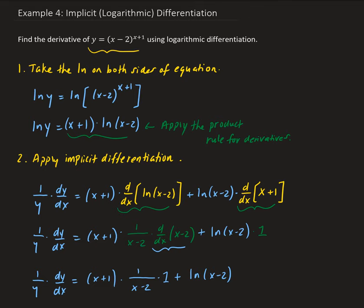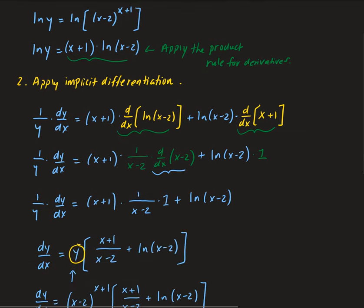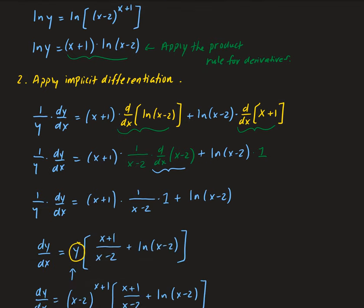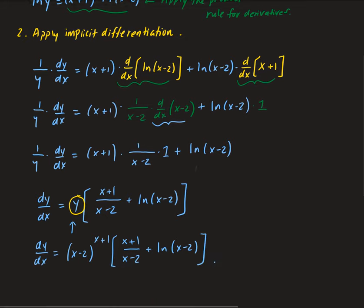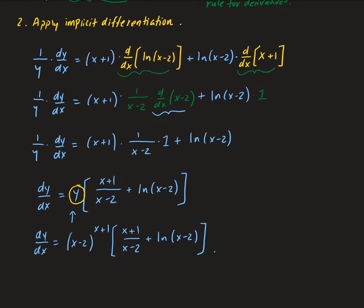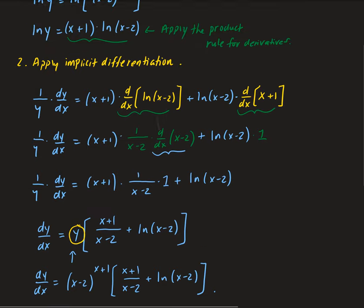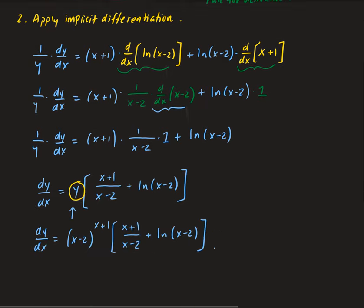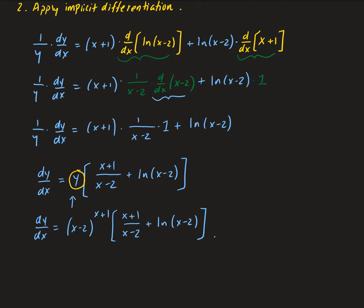So to summarize: when applying logarithmic differentiation, the first step is to take the natural log of both sides, which allows us to bring down the exponent x plus 1. From there we apply implicit differentiation on both sides, then multiply both sides by y and replace y with the original function, so that our derivative is expressed entirely in terms of x.